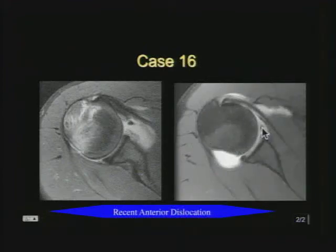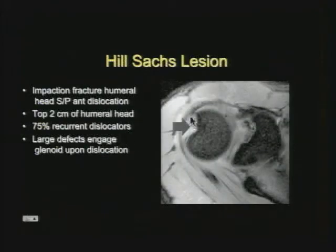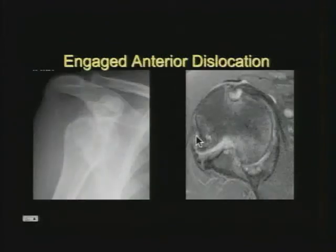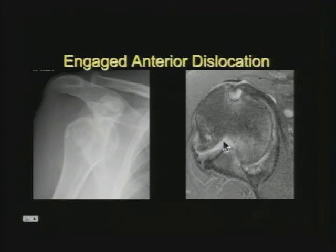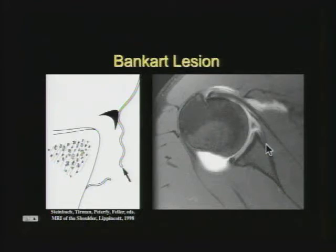Let's look at labral tears associated with anterior dislocation. In the anterior inferior labrum, there's a little labrum separated from the glenoid — that's the Bankart lesion. We also see flattening and high signal in the humeral head consistent with a Hill-Sachs lesion in the top two centimeters of the humerus laterally and posteriorly. This is called an engaged anterior dislocation when the humerus engages on the anterior inferior glenoid, especially with a large Hill-Sachs lesion.